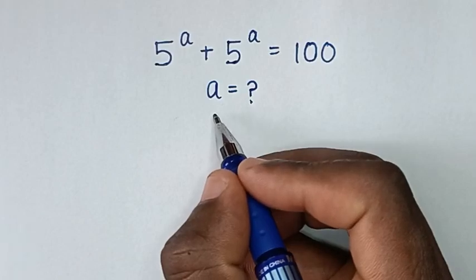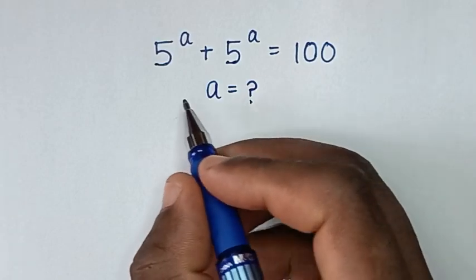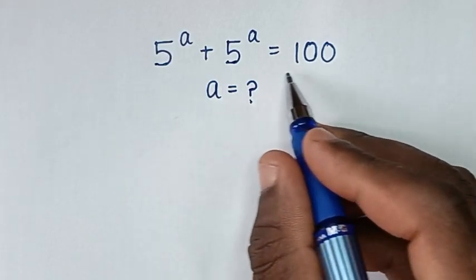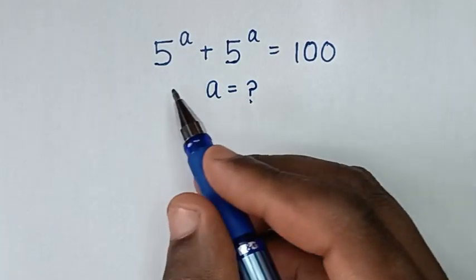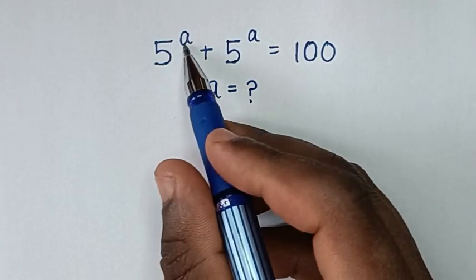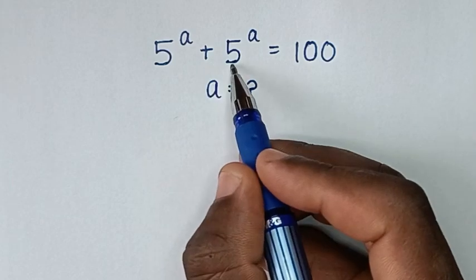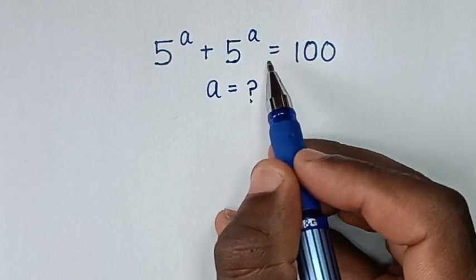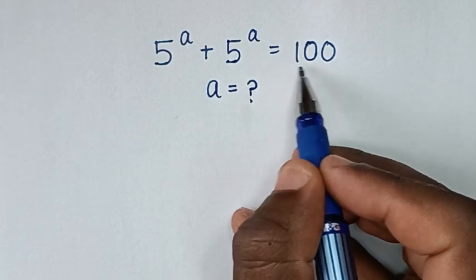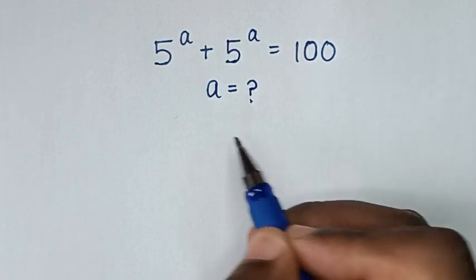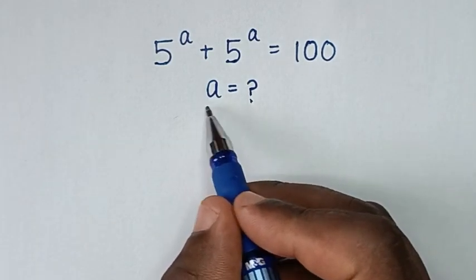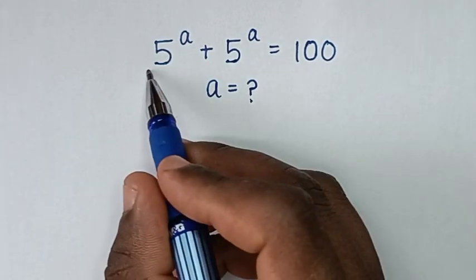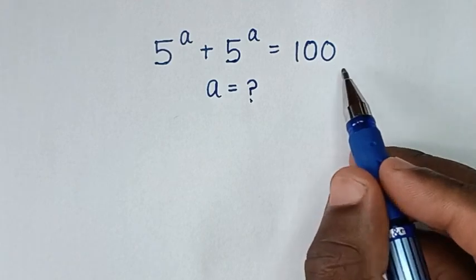Hello, you are welcome to solve this math problem: 5 power of a plus 5 power of a is equal to 100. Find the value of a from this equation.